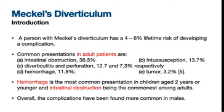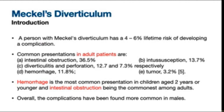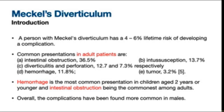A person with Meckel's diverticulum has a four to six percent risk of developing complications. Common presentations in adults include bowel obstruction, which occurs in more than 36% of patients, intussusception, diverticulitis and perforation, bleeding, and tumors. Hemorrhage is the most common presentation in young children, while bowel obstruction is commonest among adults. Complications have been found to be more common in males.